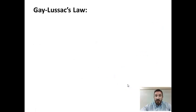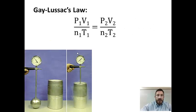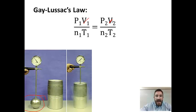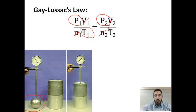One last idea is Gay-Lussac's Law. An example would be taking an aerosol can and putting it in a flame. This represents a rigid container. Here we have a rigid container at room temperature, and then it's placed in liquid nitrogen — which is extremely cold. Since volume can't change and number of moles can't change in a rigid container, the formula for Gay-Lussac's Law is P1/T1 = P2/T2.